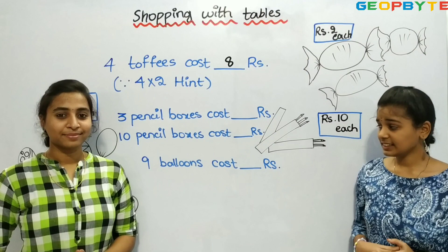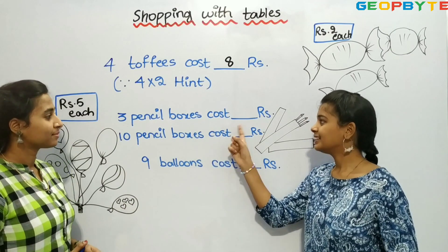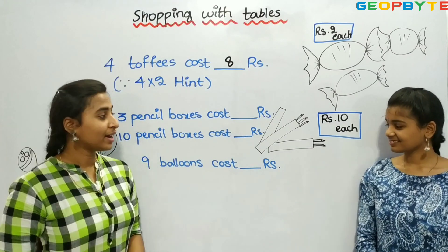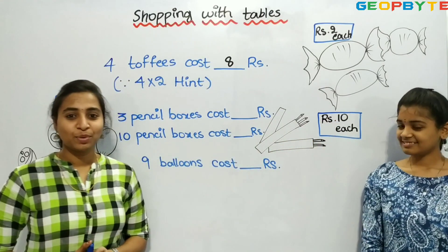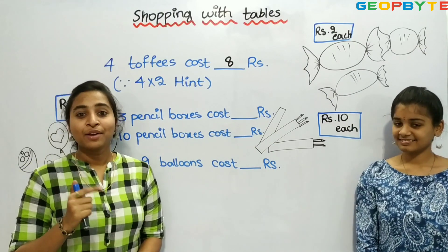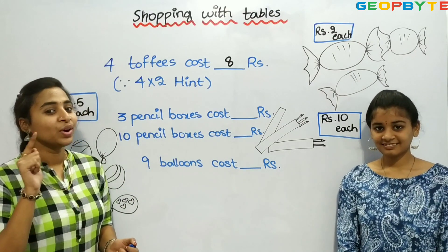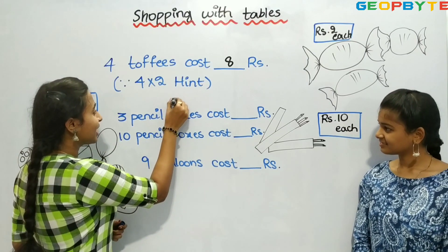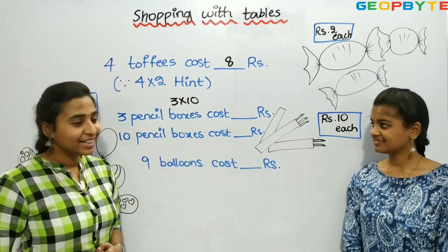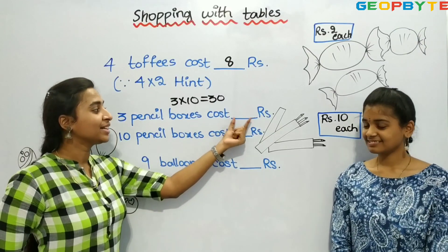Now, let us see the next one. 3 pencil boxes cost dash rupees. Here we have 3 pencil boxes and rupees 10 each pencil box. So each pencil box is rupees 10. We need to find the cost for 3 pencil boxes. So, 3 into 10. 3 tens are 30. So, 3 pencil boxes cost 30 rupees.